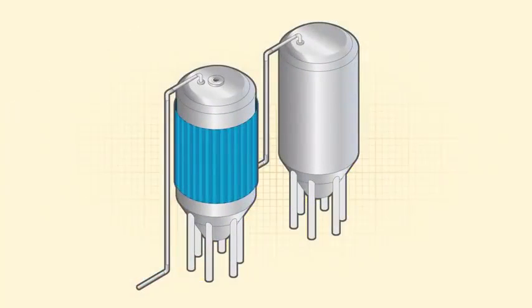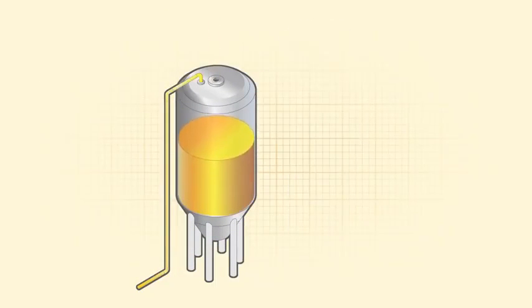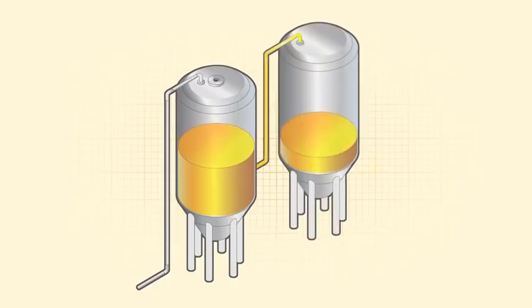To start the fermentation, yeast is added during the filling of the vessel. Yeast converts the sugary wort into beer by producing alcohol, as well as a wide range of flavors and carbon dioxide, which is used later in the process to give the beer its sparkle.